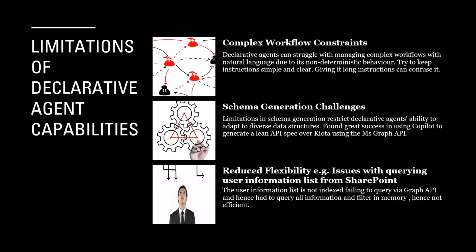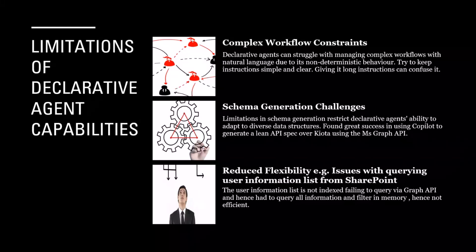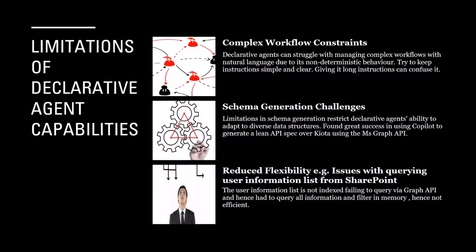We also had an issue when generating the plugins — the API schemas. We were using Kiota, but for whatever reason, when we generated them that way, the declarative agent would only ever choose one of the plugins, never the other one. In the end, we used GitHub Copilot to generate them instead — we just said 'generate this API' and it did it and it worked. Not sure what happened with Kiota, but that's something we came across as we went through.